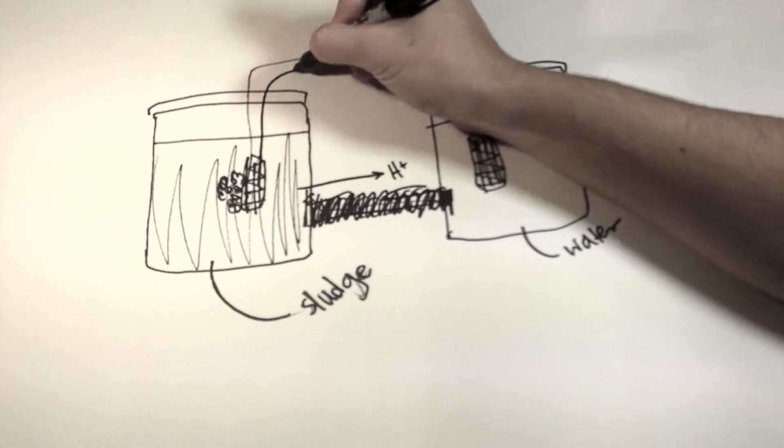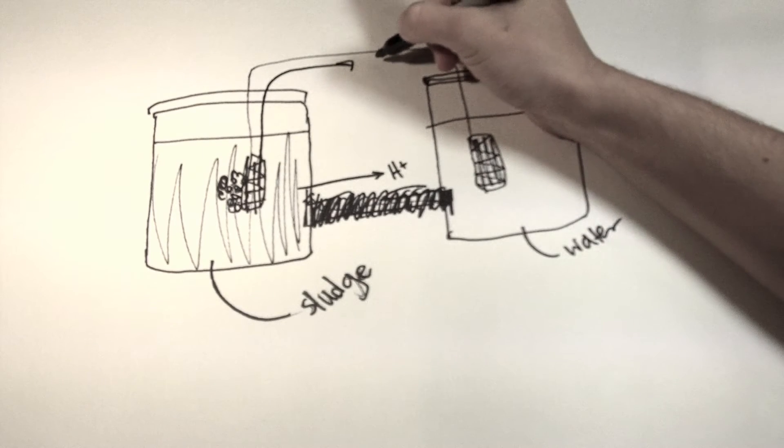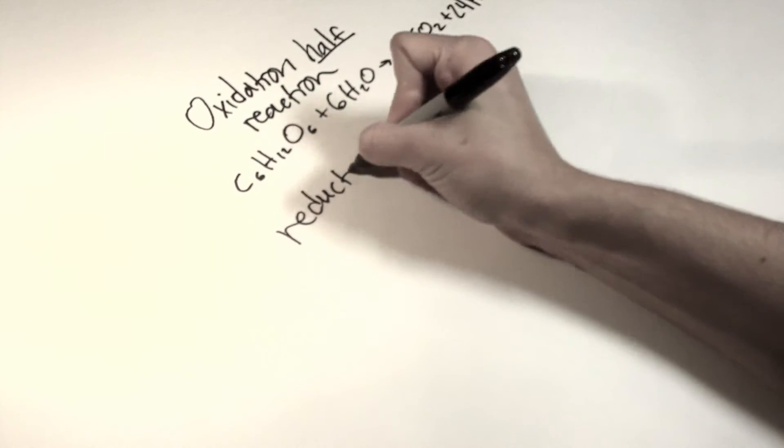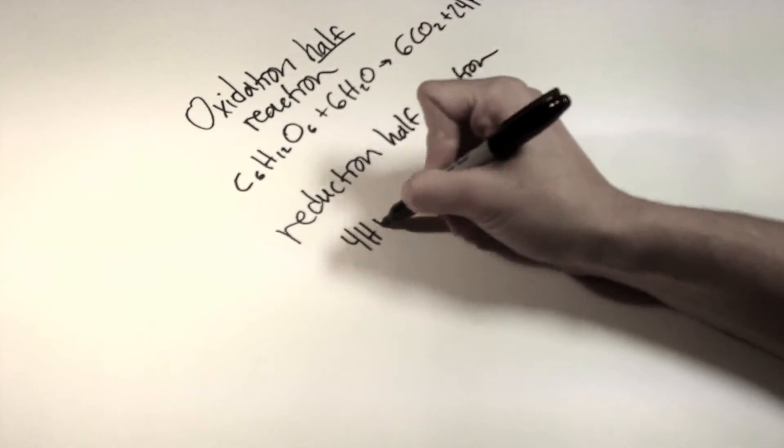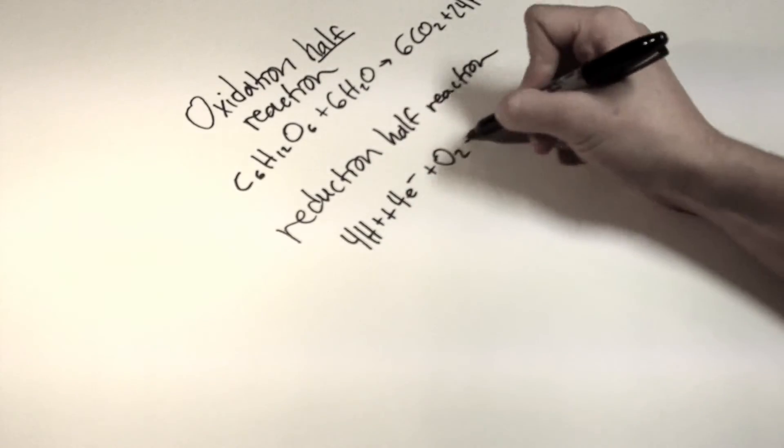Positive hydrogen ions need somewhere to go. With every oxidation reaction, a reduction reaction must occur. So they cross the salt bridge, electrons cross the copper wire to enter the second chamber. In the second container, a reduction reaction occurs. Here's the half reaction: 4 positive hydrogen ions plus 4 electrons plus the oxygen in the water yields 2H2O.